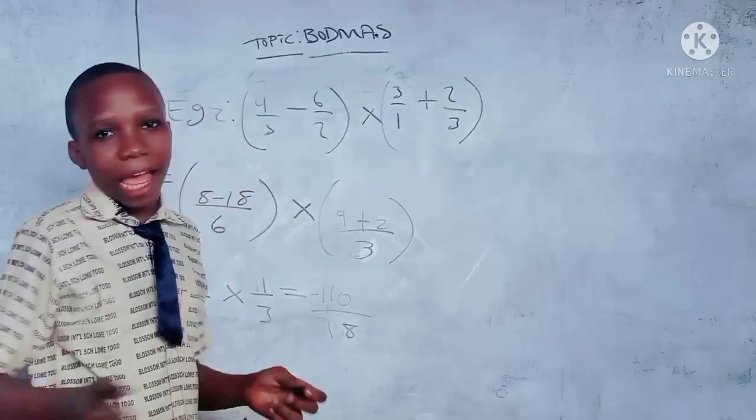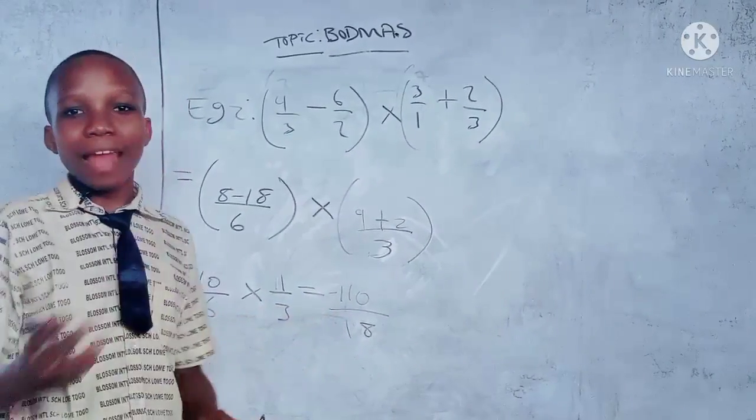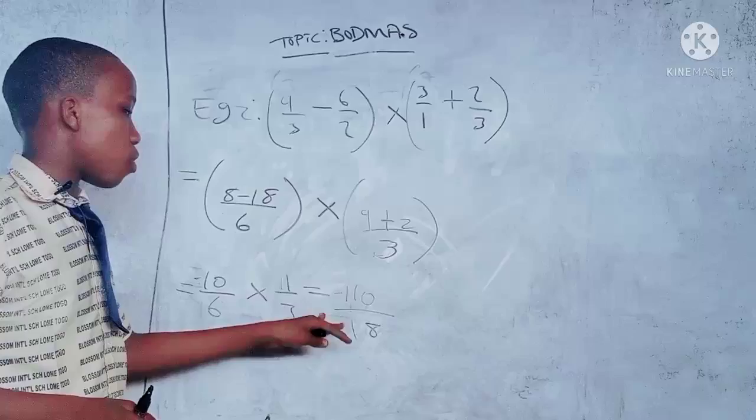Negative one hundred and ten over eighteen. This is our answer for now, but if you like, you can simplify it to lowest form.